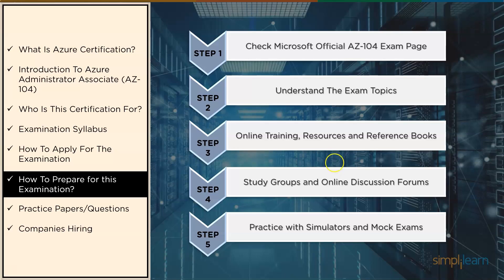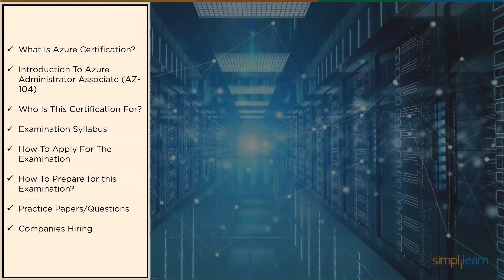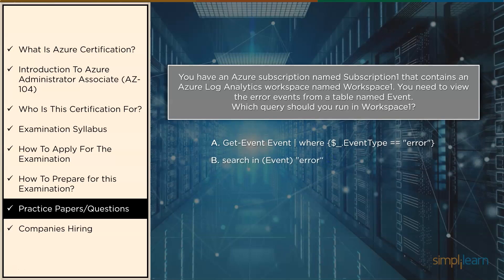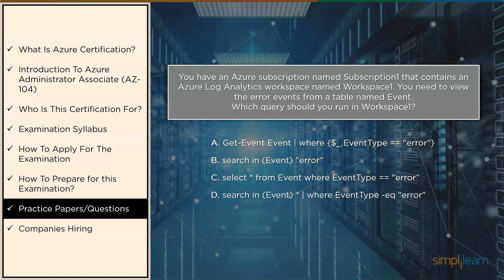Now let's have a look at some practice questions. The first question is: you have an Azure subscription named subscription one that contains an Azure Log Analytics workspace named workspace one. You need to view the error events from a table named event. Which query should you run in workspace one? Options: A) get event where event type == error; B) search in event error; C) select from event where event type == error; D) search in event where event type is equal error. The correct answer is option B.